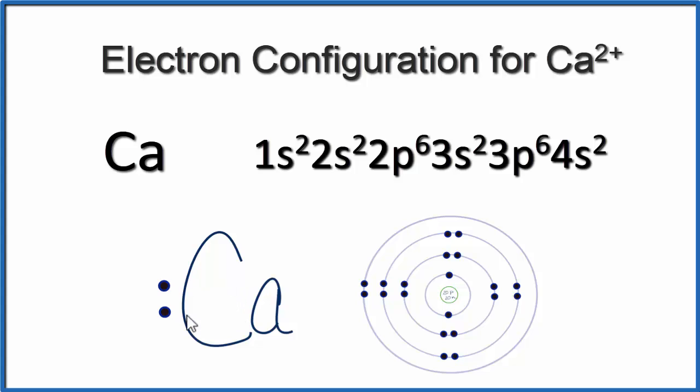...and this would be a Lewis dot diagram for calcium. We have the first energy level, the 1s2, that's right here, and it has 1, 2 electrons in it. That energy level is full, so we go to the second energy level, and we have 2 plus 6. We have 8 in that energy level.